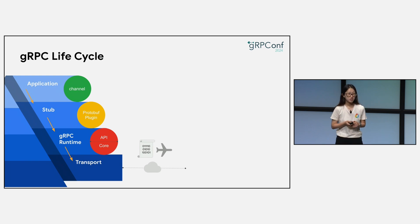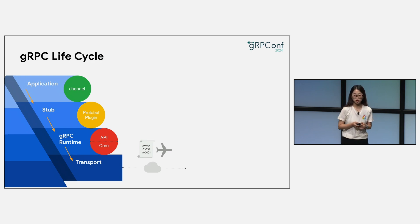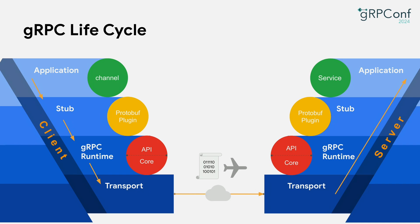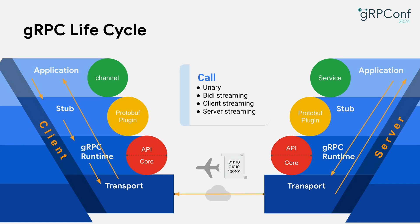Upon connection establishment, gRPC will send a request over the wire using protobuf serialization, with data framed using the HTTP/2 protocol. The server side is a mirror of the client side. The server transport, once it receives the request, passes the messages up to the gRPC runtime towards the stub and notifies the application. The application sends a response back on the stub. Depending on how many round trips occur within each RPC, gRPC supports four types: unary (one request, one response), bidirectional streaming (multiple in both directions), client streaming, and server streaming. In principle, gRPC is always asynchronous, though some APIs are blocking — these are just special cases of asynchronous calls.